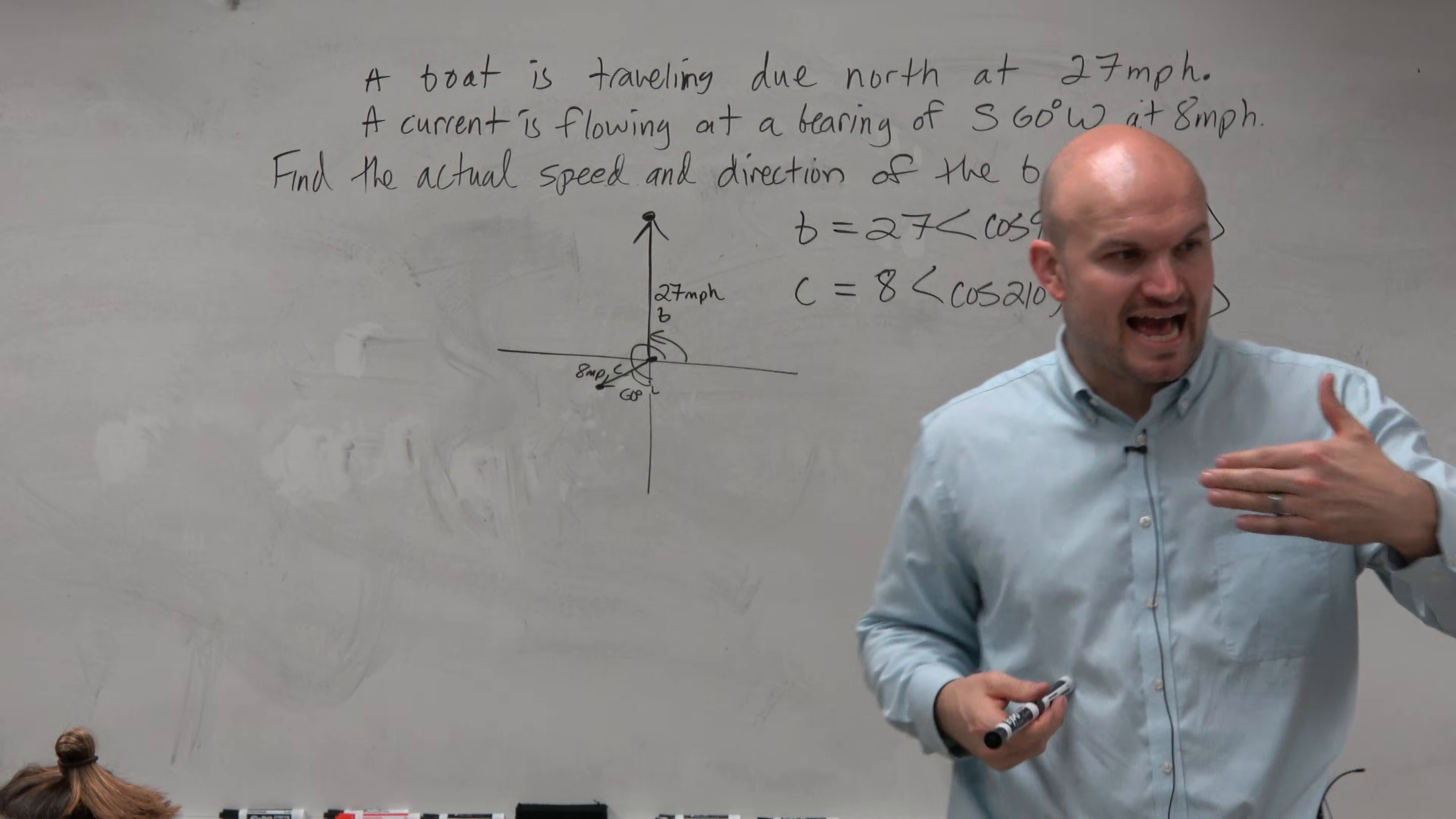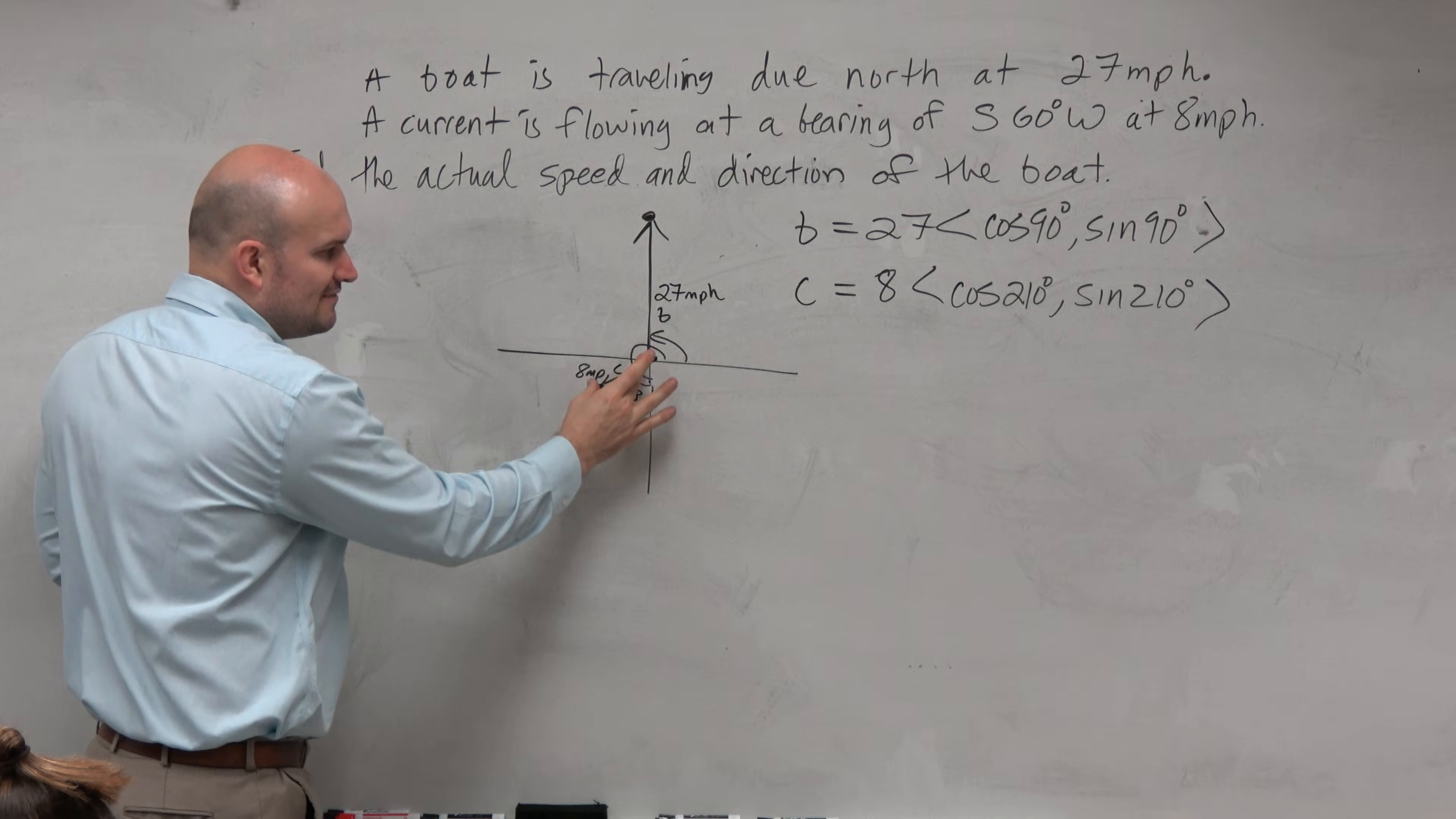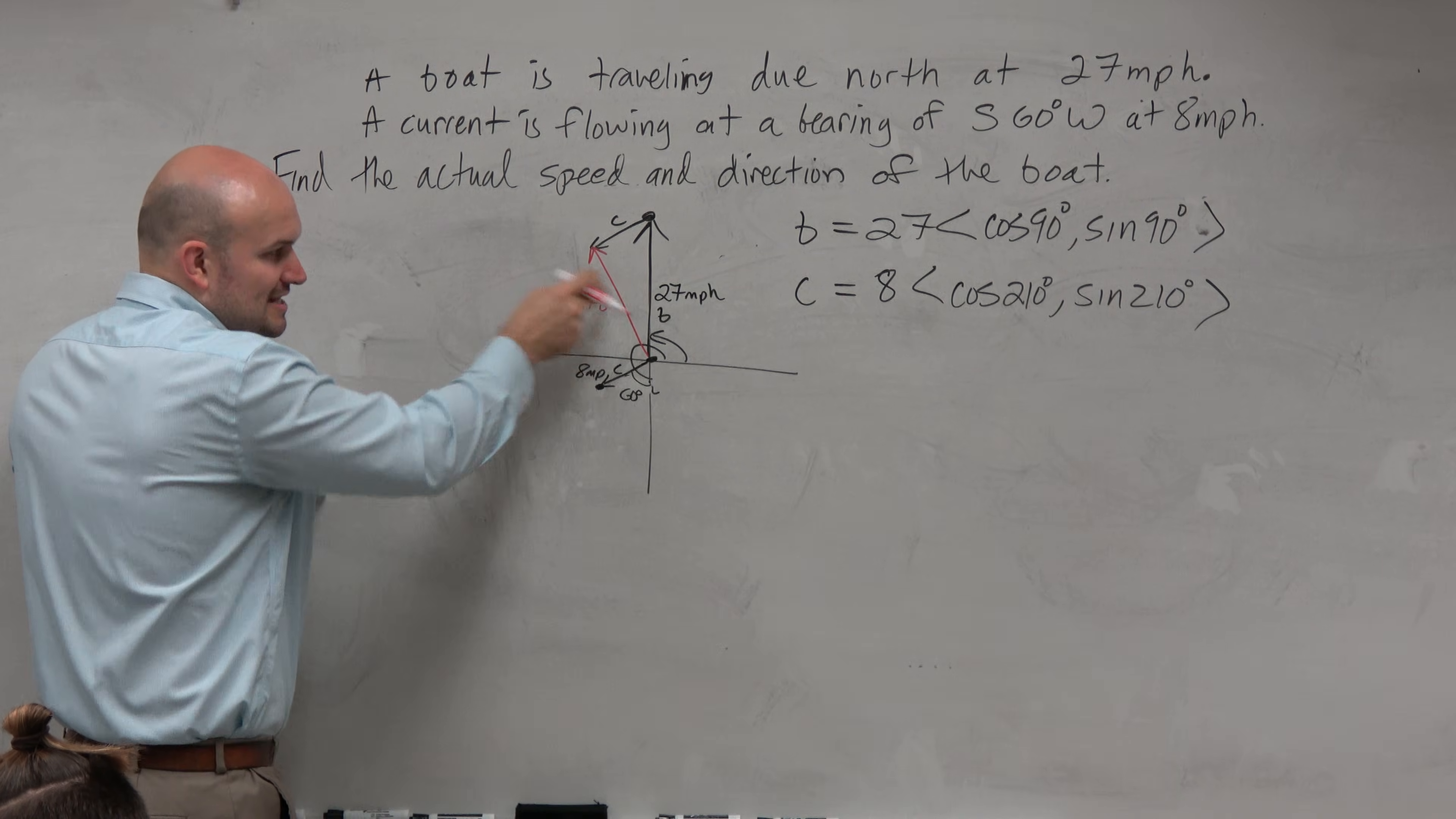So if we need to find the actual speed and direction of our boat, what is it we're actually looking for? We're looking for the result. We're looking for what is happening when the boat is being impacted by the current. So basically what we're looking for is the sum of these two vectors. So instead of drawing your vector separately, what if we drew vector c up here? Head to tail method. And what you would see is the resultant vector, which would be c plus b. That's what we want to figure out. That's what we want to figure out the speed for. That's what we want to figure out the angle for, that vector.